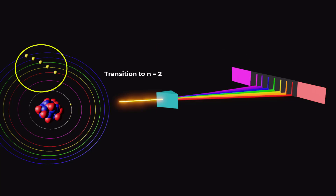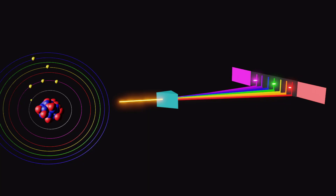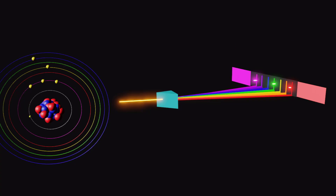When an electron jumps from the third or higher energy level to the second energy level, visible light is produced in the form of red, blue, green, and all other visible colors of light. The set of these colors is called the Balmer series.